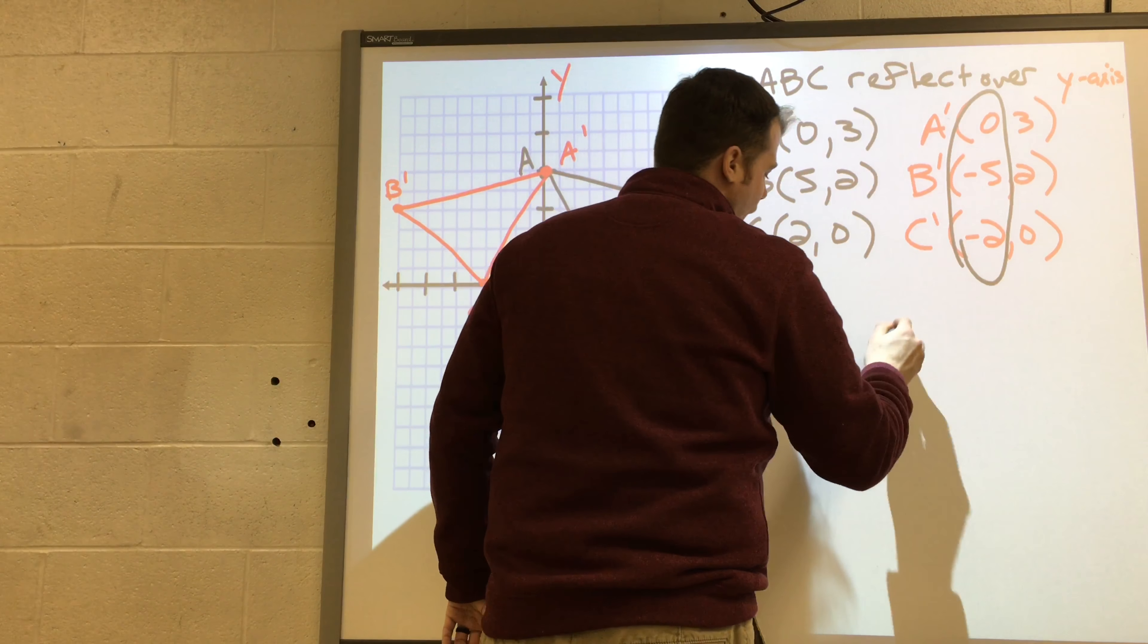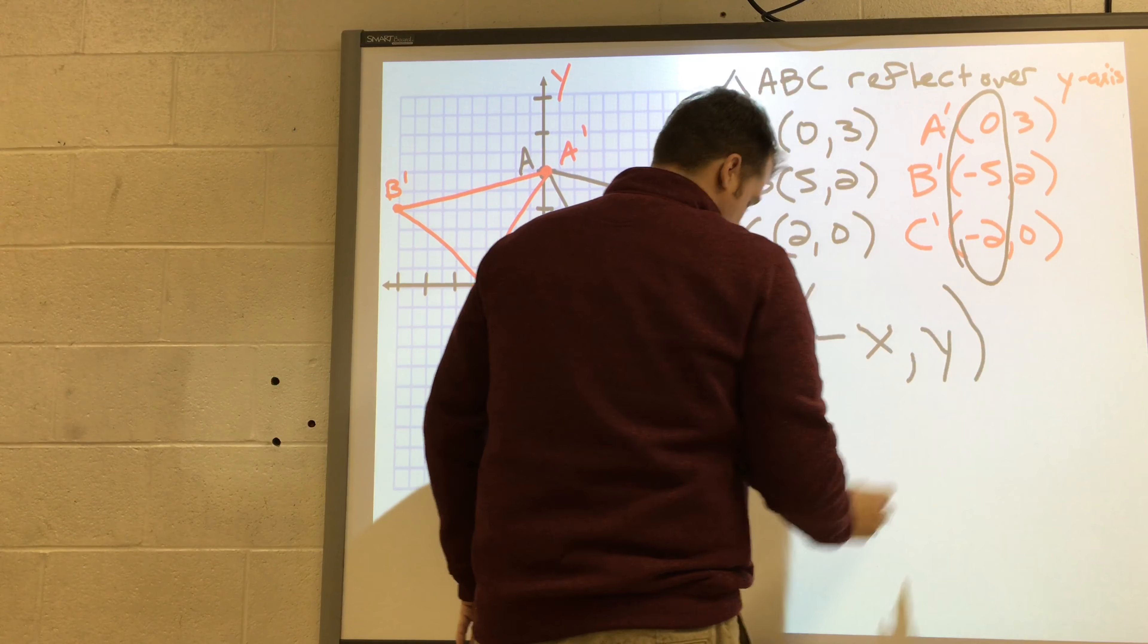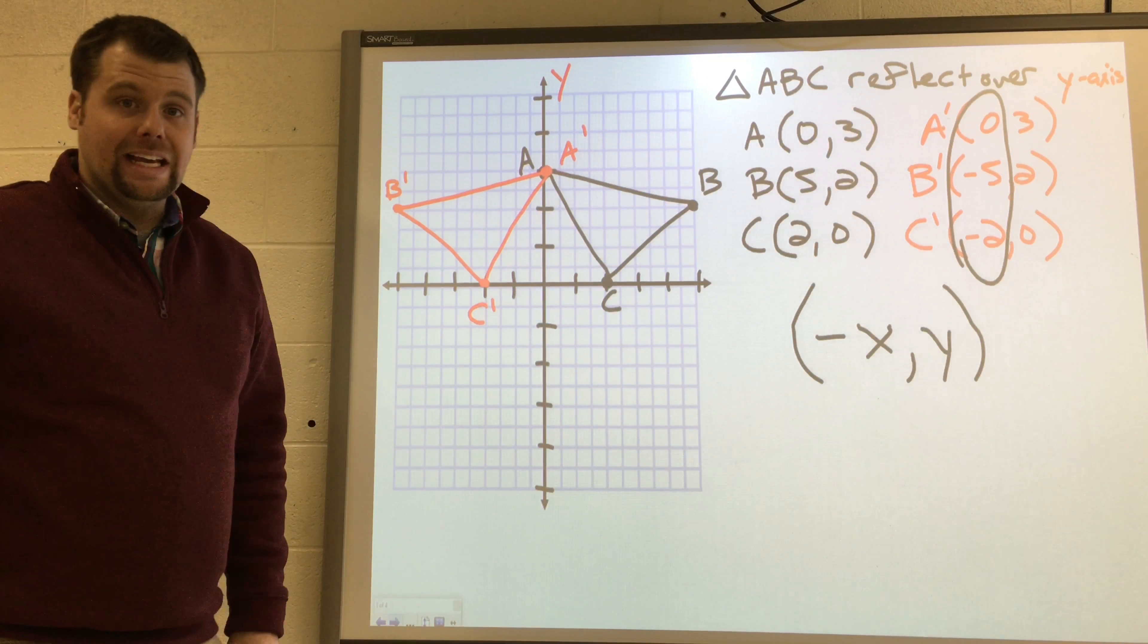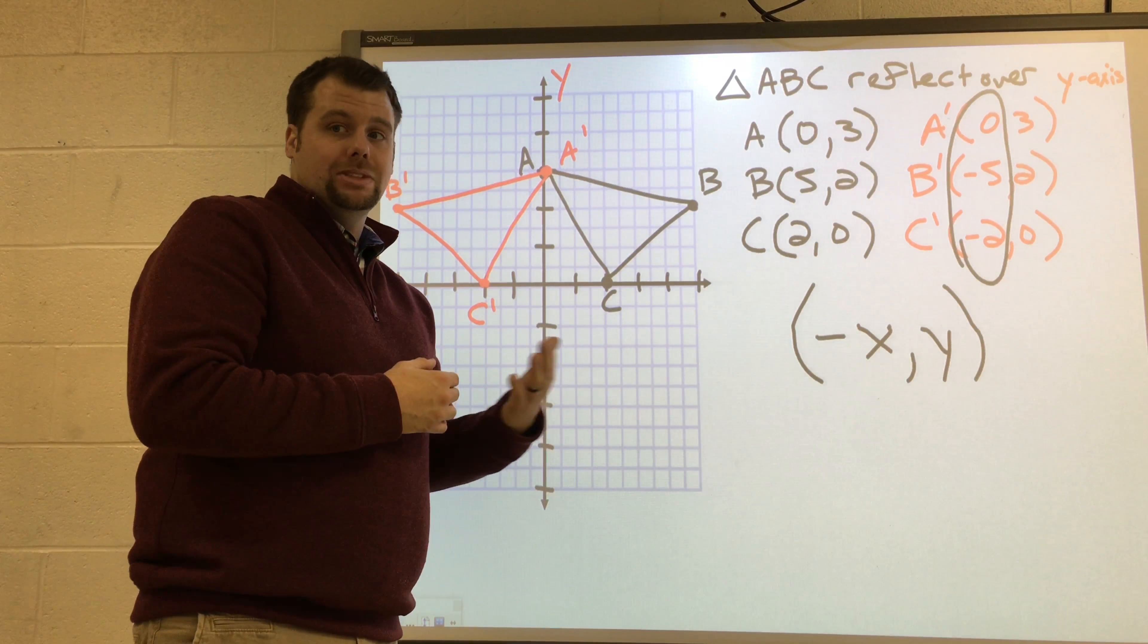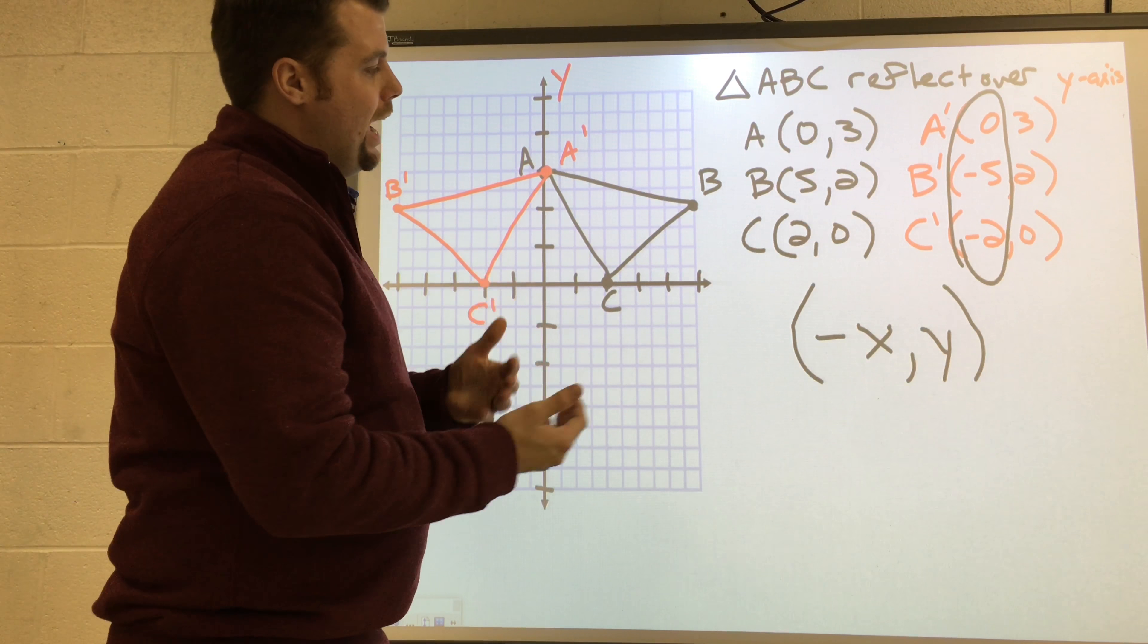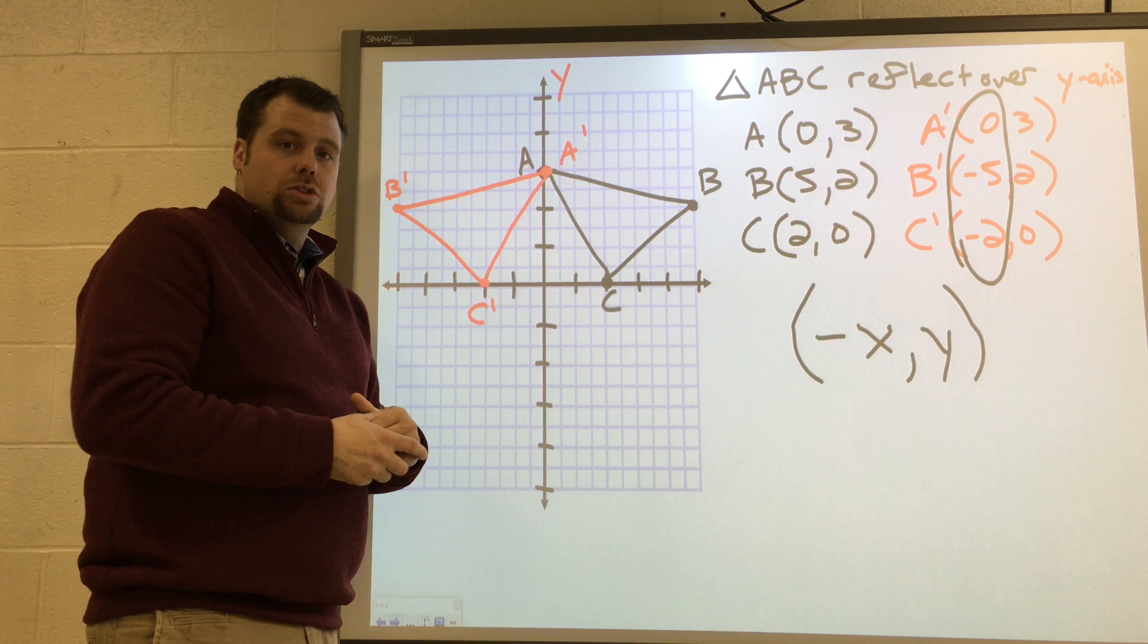When you reflect over the y-axis, you make your x's negative. When you reflect over the x-axis, you make your y's negative or the opposite sign. When you reflect over the y-axis, you make your x's negative or you change their sign.